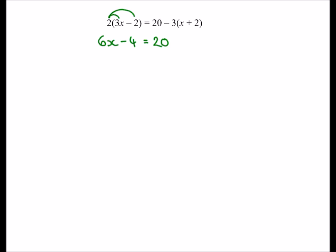We've got to be really careful with the minus sign here. This means minus 3 times x is minus 3x, and minus 3 times plus 2 is minus 6. A typical mistake would be to do 20 minus and then just times out by 3, getting 3x plus 6, forgetting that the minus is involved with the 2 as well. That's a common mistake — don't make it.